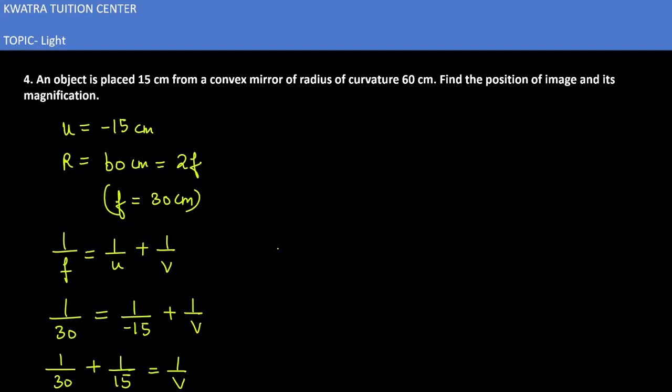So LCM would be 30. First number would be as it is. Second, multiply by 2. So it would give you 3 over 30 is equal to 1 over v. So 1 over v equals 1 over 10. How much is v value? 10 cm.